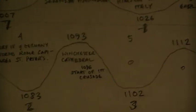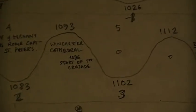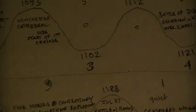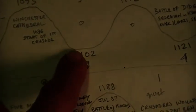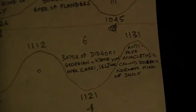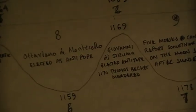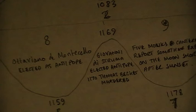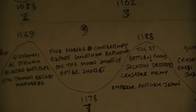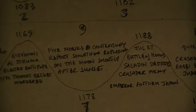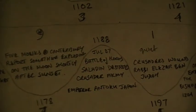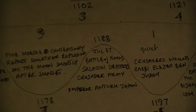The start of the Crusades — I suppose 1099 would have been within this window, so I didn't write it down. It's hard to put the whole of history on a few pages. And then there's this: five monks at Canterbury report something exploding on the moon shortly after sunset — everyone just thinks, what are they smoking?